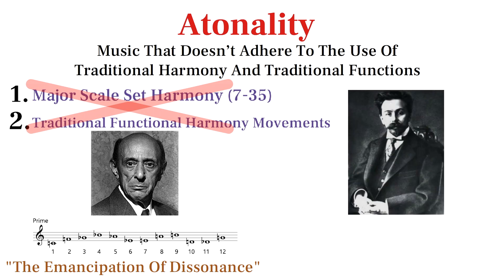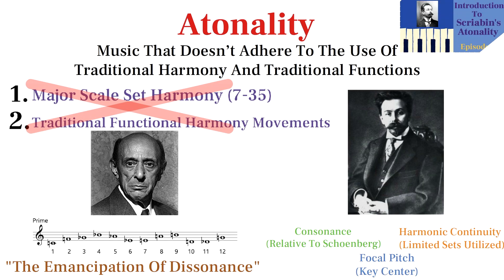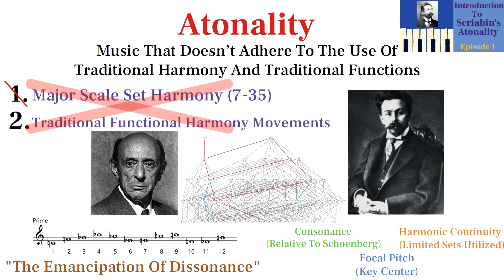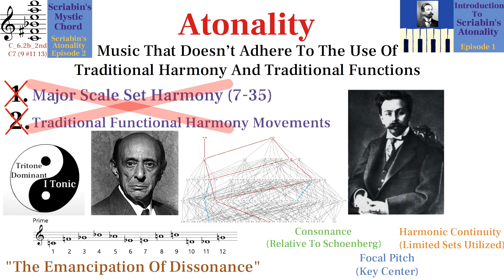Scriabin, however, made a gradual transition to atonality that retained a lot of traditional notions of consonance, harmonic continuity, and even starting and ending on the same focal pitch. What makes Scriabin's late era music atonal by my definition is that entire compositions use sets outside the major scale and traditional functions like 5 to 1 are not used. I do argue in my series on Scriabin's atonality that his movement of a tritone is similar to a tonic-dominant relationship, but this is a very non-traditional movement for a tonic-dominant relationship.